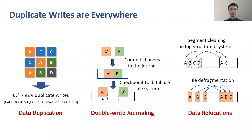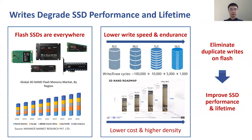As we know, duplicate writes are everywhere in storage systems. For example, data duplication, journaling in databases, and data relocations all introduce writes of duplicate data. On the other hand, NAND-flash-based SSDs have been widely used, and they suffer from slow writes and limited write endurance. So, if we can eliminate duplicate writes on flash, the SSD performance and lifetime will be largely improved.